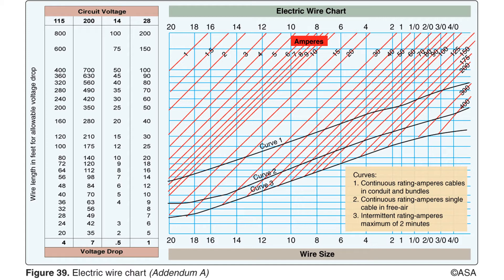Let's see how we can use this wire chart to determine the minimum gauge of wire needed in a 15 amp circuit 30 feet in length. First we will locate the 15 amp diagonal and trace it down until it meets the horizontal line for a wire length of 30 feet in a 28 volt system. The lines intersect between the points for 14 gauge and 12 gauge wire. We will always choose the larger of the two wire gauges, so in this circuit we will need a 12 gauge wire.